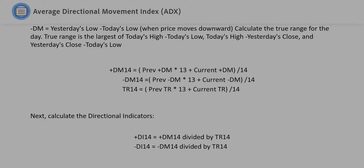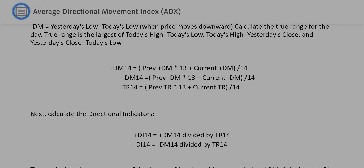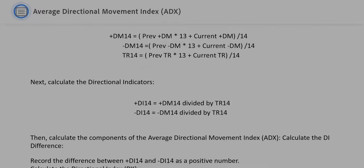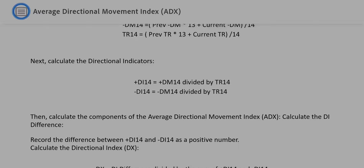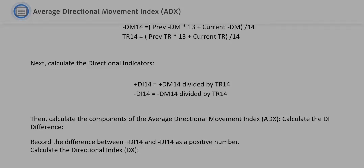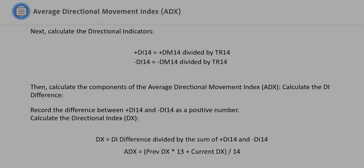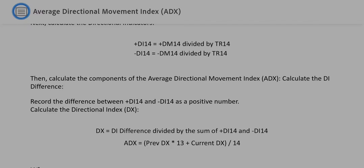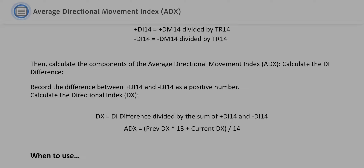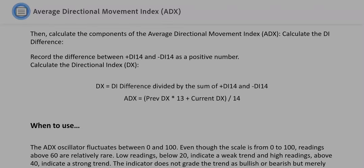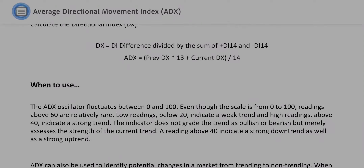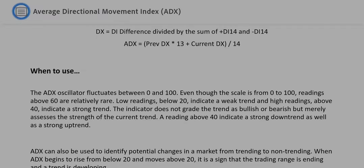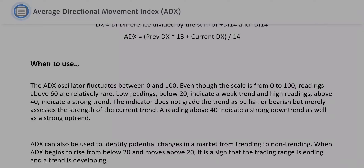Calculations: Calculate the true range for the day. True range is the largest of: two day's high minus two day's low; two day's high minus yesterday's close; and yesterday's close minus two day's low. +DM14 = (prev +DM × 13 + current +DM) / 14. -DM14 = (prev -DM × 13 + current -DM) / 14. TR14 = (prev TR × 13 + current TR) / 14. Next, calculate the directional indicators: +DI14 and -DI14. Then calculate the components of ADX: record the difference between +DI14 and -DI14 as a positive number. Calculate the directional index DX: DX = difference / (sum of +DI14 and -DI14). ADX = (prev DX × 13 + current DX) / 14.